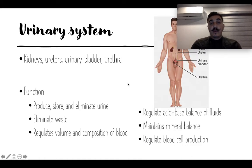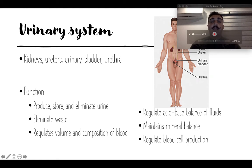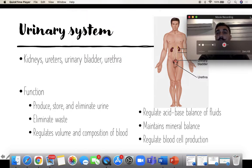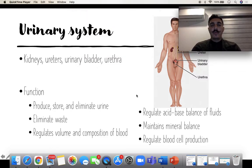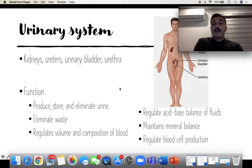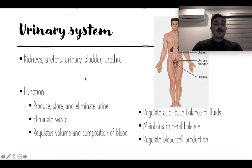The urinary system eliminates liquid waste. It's mainly the kidneys, ureters, urinary bladder, and urethra. Its functions include producing, storing, and eliminating urine; regulating the volume and composition of blood; maintaining mineral balance; and regulating blood cell production.